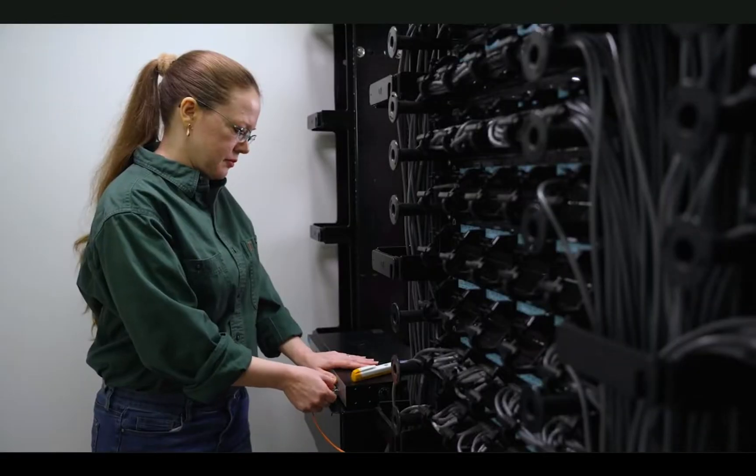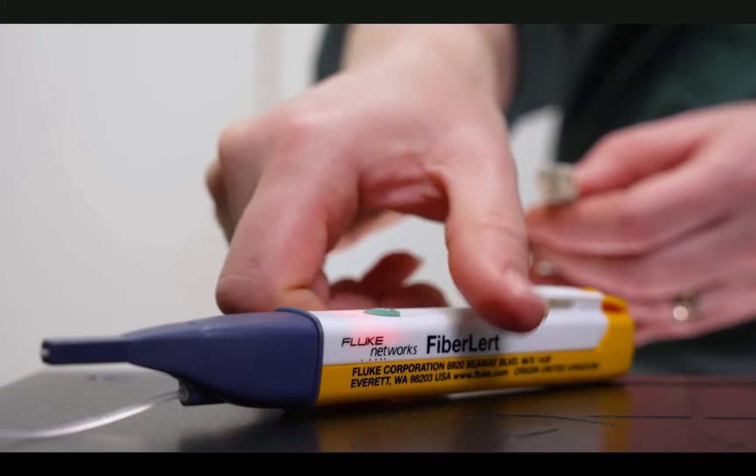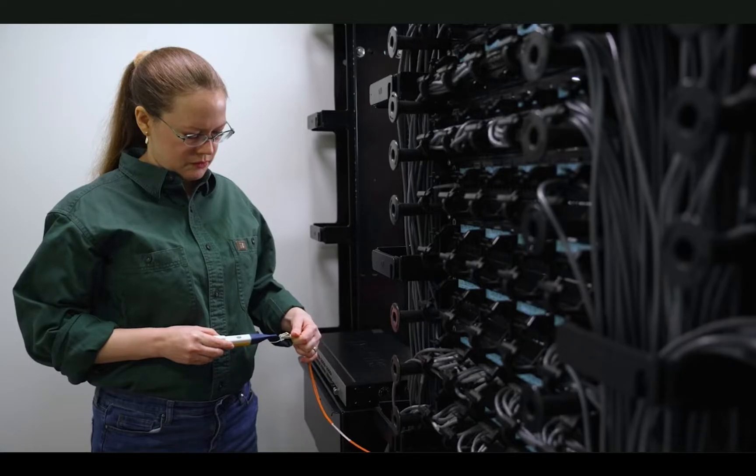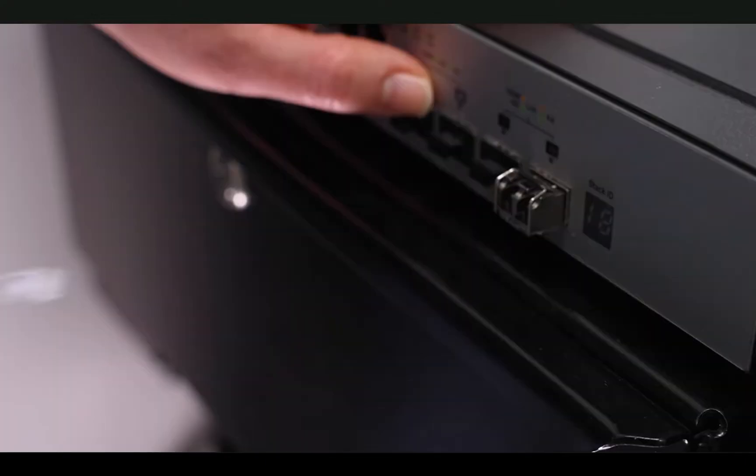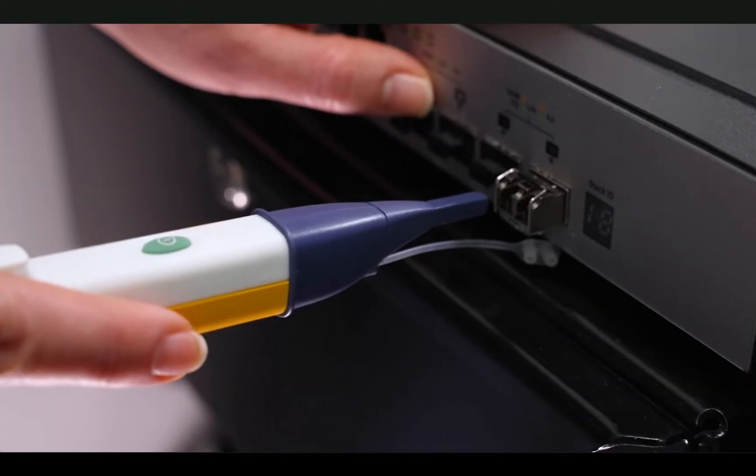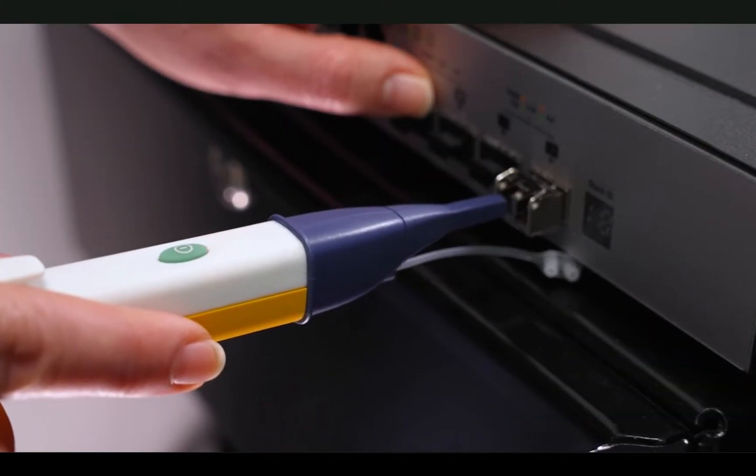Simply disconnect the suspect connection and use Fiber Alert to verify operation. If light is present, the end will switch from blinking to steady and you will hear a beep. Fiber Alert doesn't even have to touch the end face. If it isn't working, you know where the issue lies.